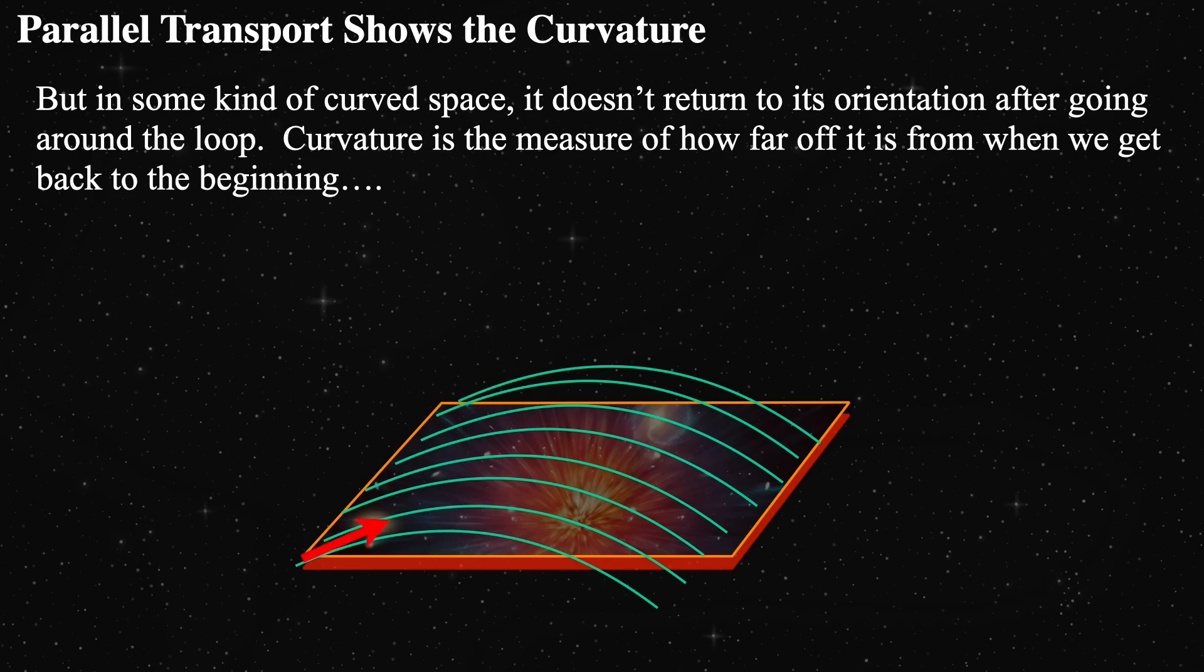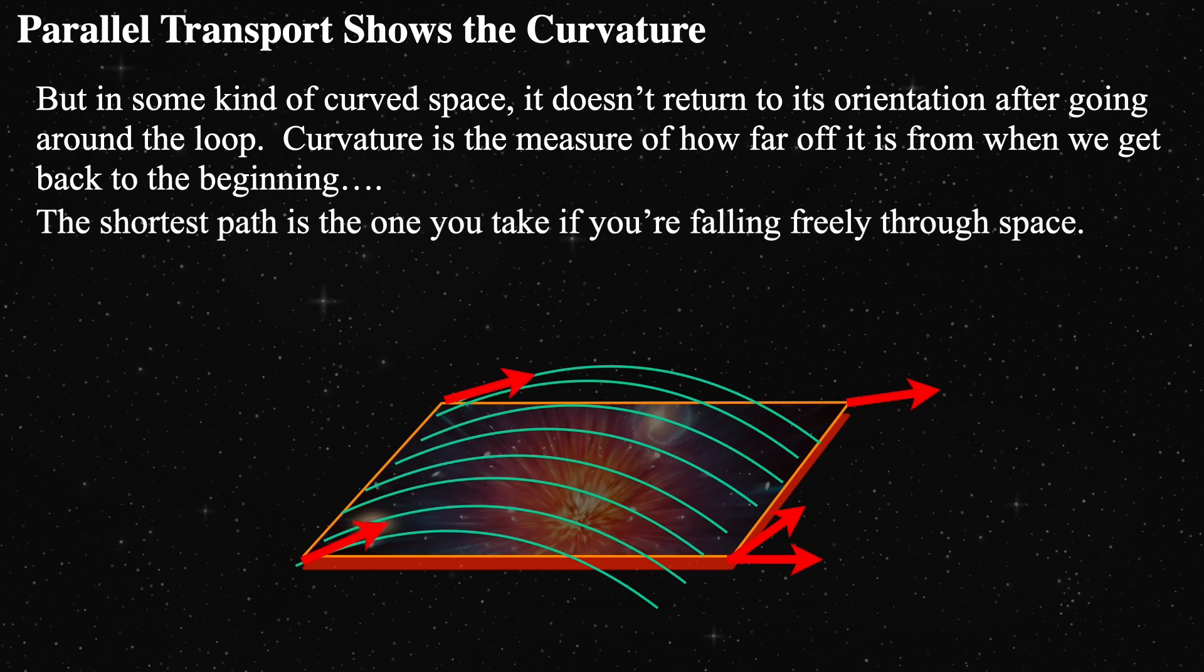We still haven't limited spaces to anything. A space could be flat here, radically curved there, and only mildly curved somewhere else. But a curved space will always change the orientation of an arrow as it is parallel transported around a loop.